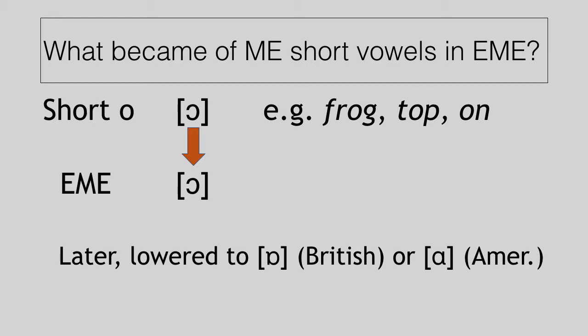So it lowered further in vowel space, from an [ɔ] to an [ɒ] or an [ɑ] sound there. So in British English, you might get a word like top. In American English, that would be unrounded to top. Both of those are more recent developments, sometime in the last couple hundred years.